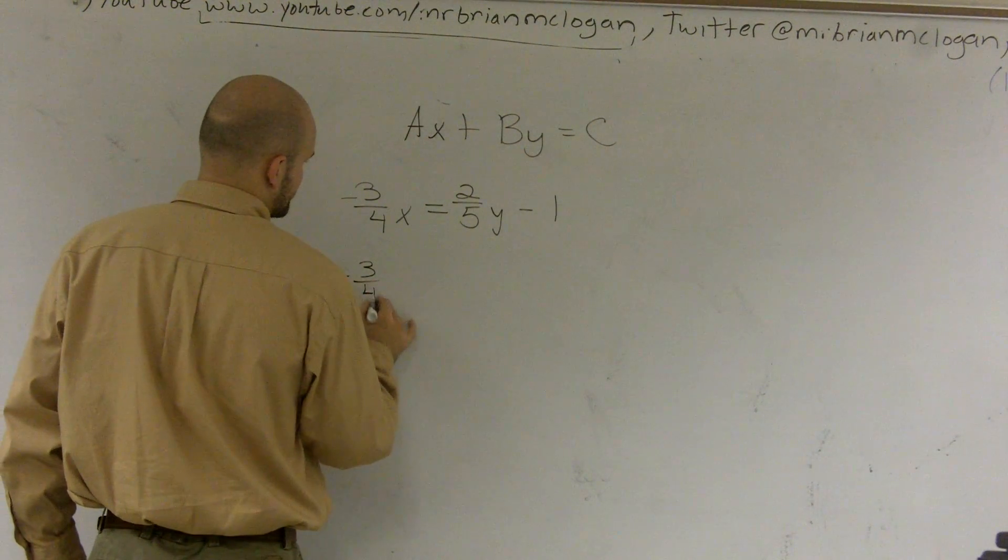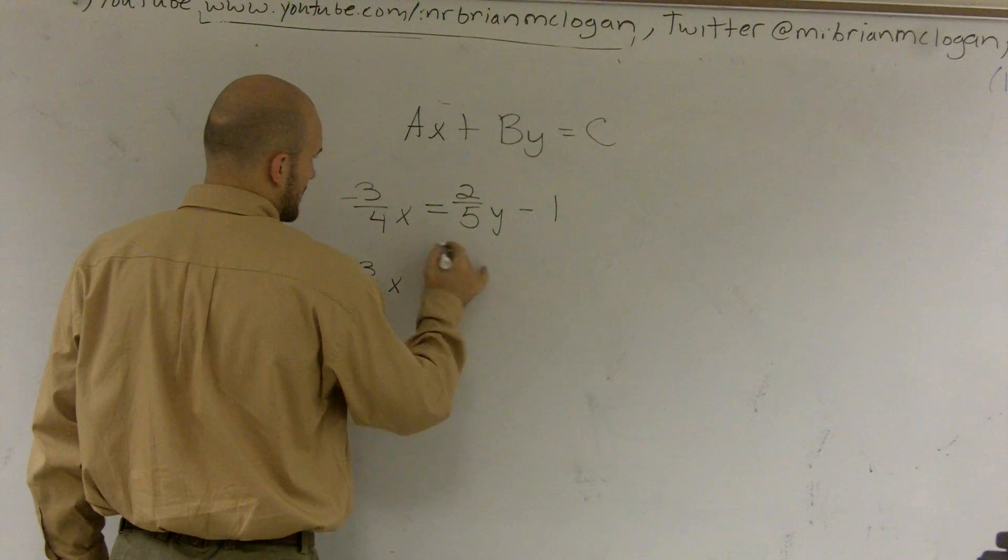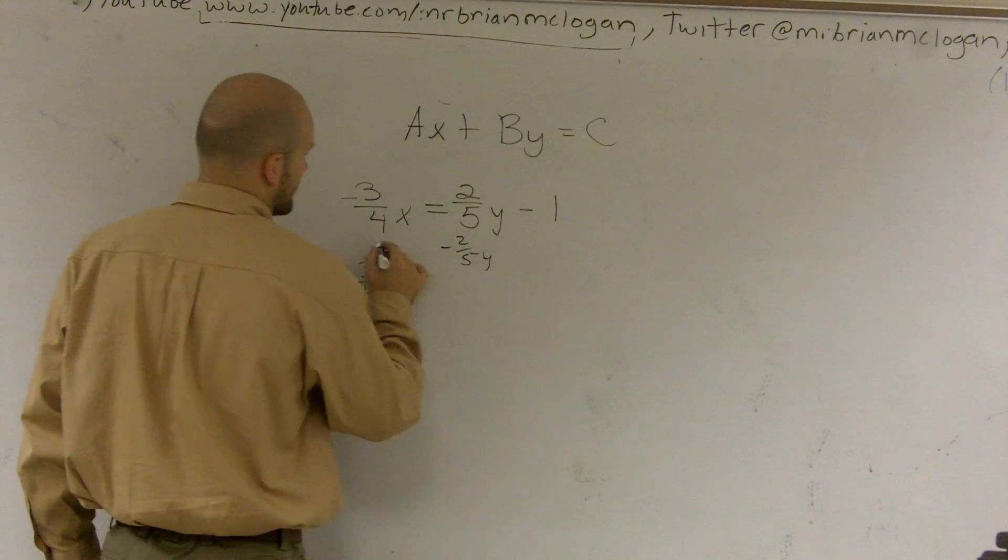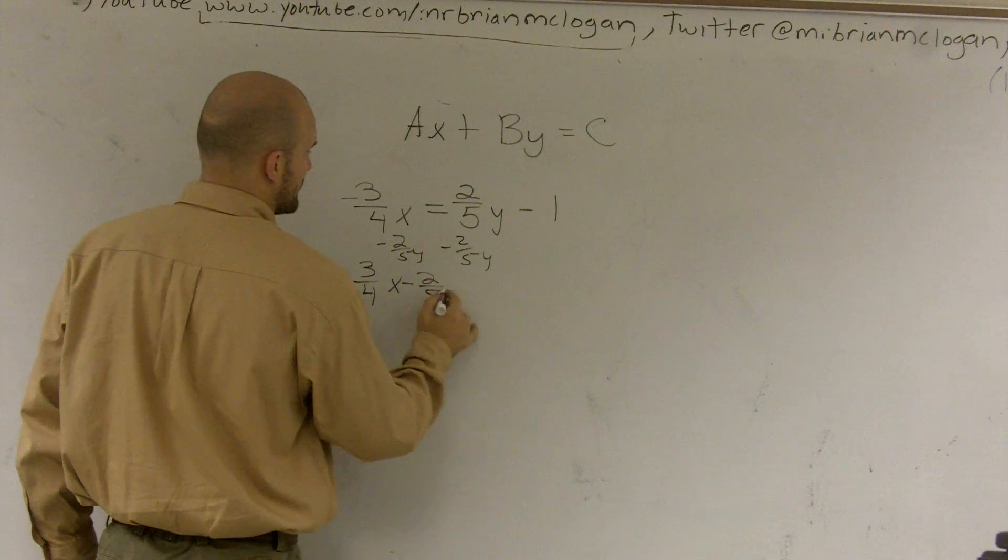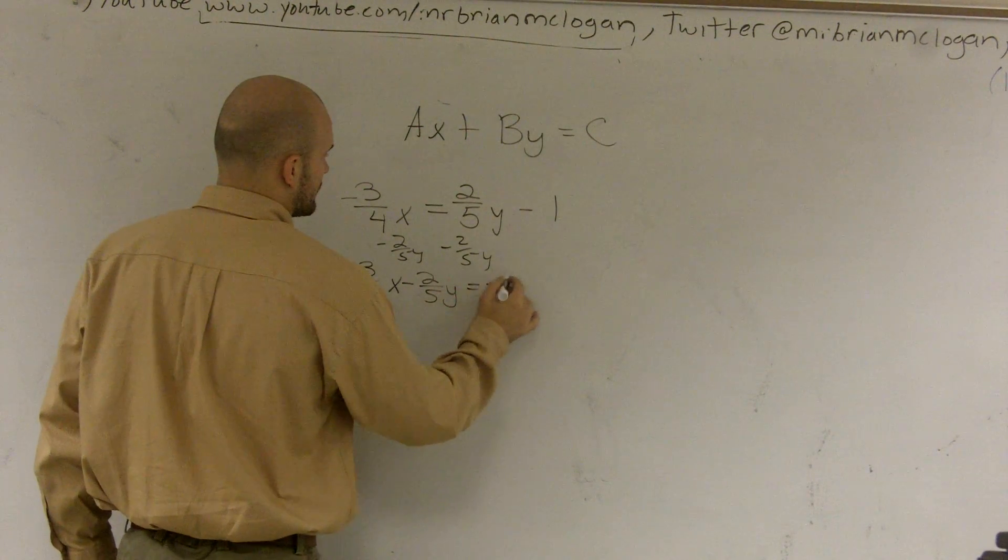So I'll get a negative 3 fourths x. I need to subtract 2 fifths y on both sides. So minus 2 fifths y equals a negative 1.